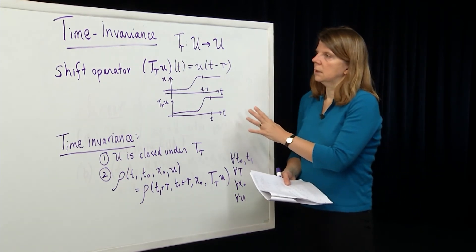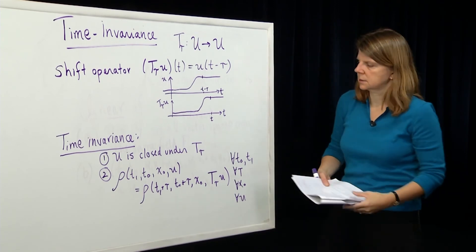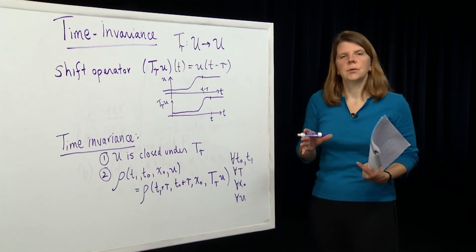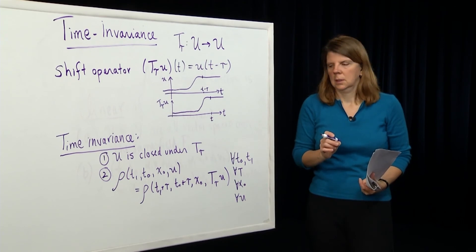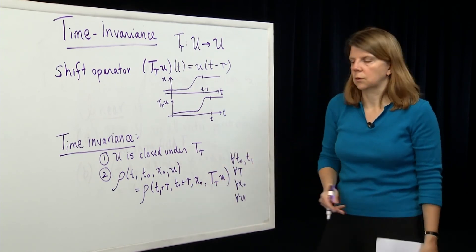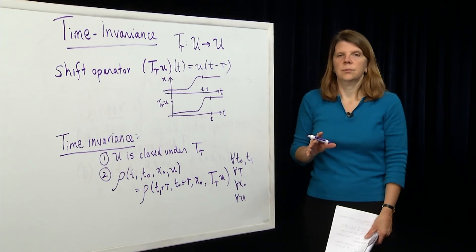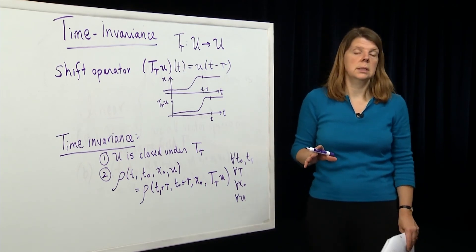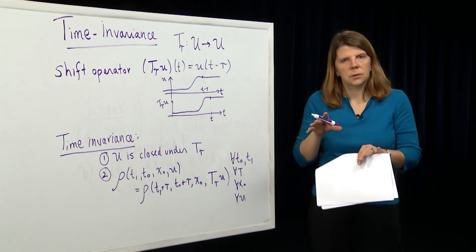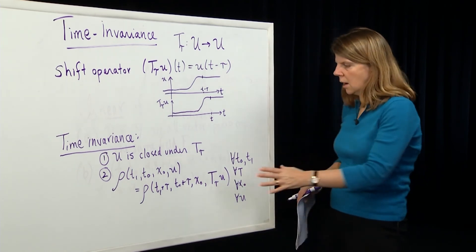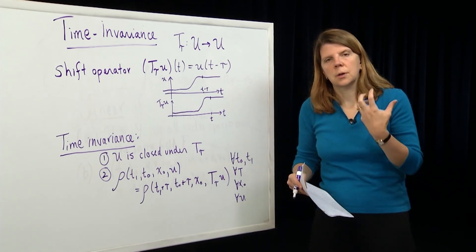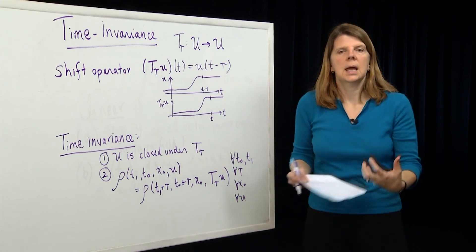We have the concept of time invariance, characterized mathematically as systems whose evolution doesn't depend on the time at which you start. You can shift time and still get the same response, as long as you shift the input accordingly. So we've given the definitions of linearity and time invariance, and the key point to emphasize is that both properties are defined in terms of the response function of the system — a function which records the dynamics on the output signal.